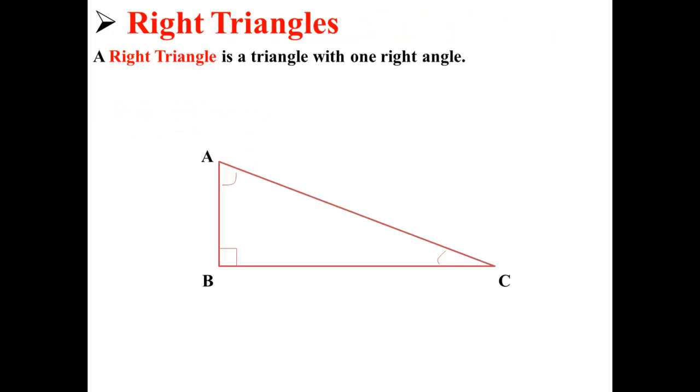Here we have a right triangle. A right triangle is a triangle with one right angle.